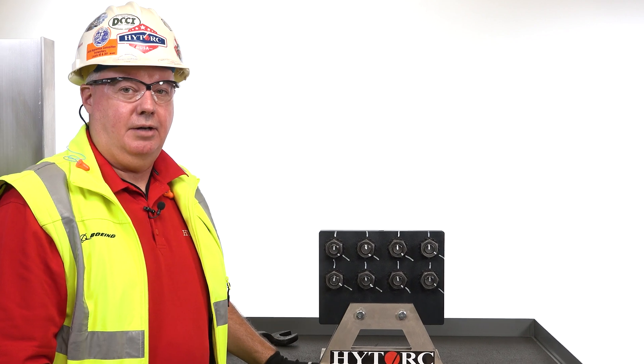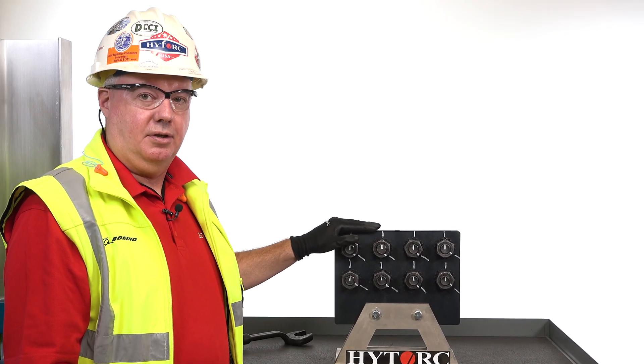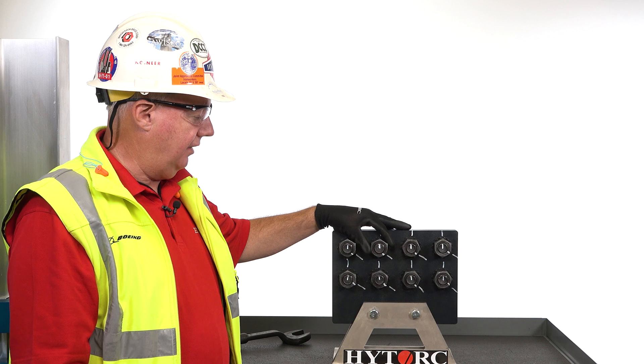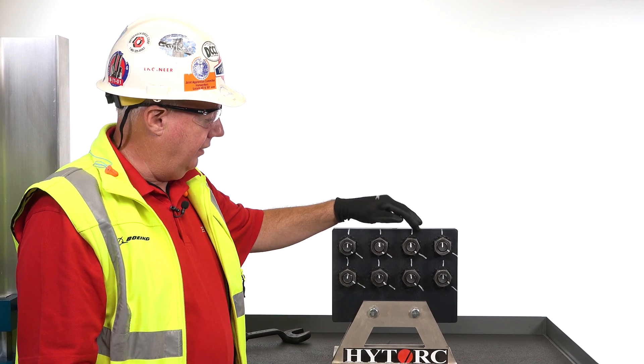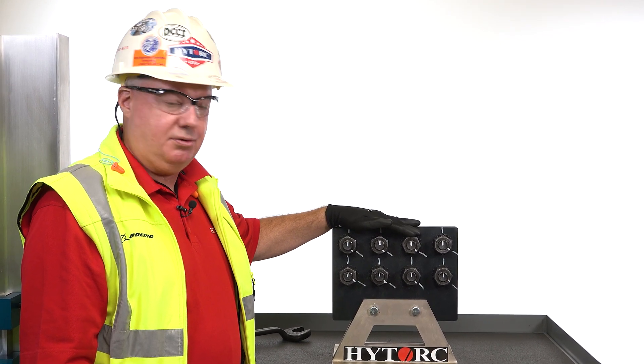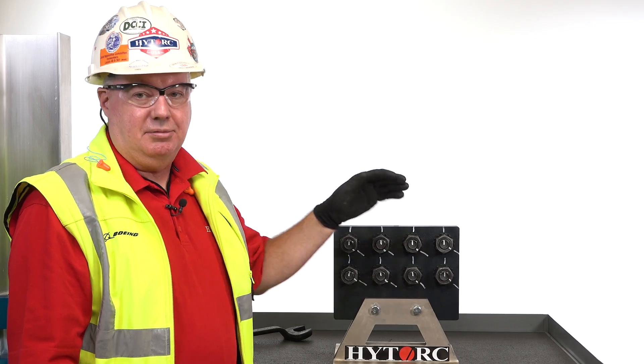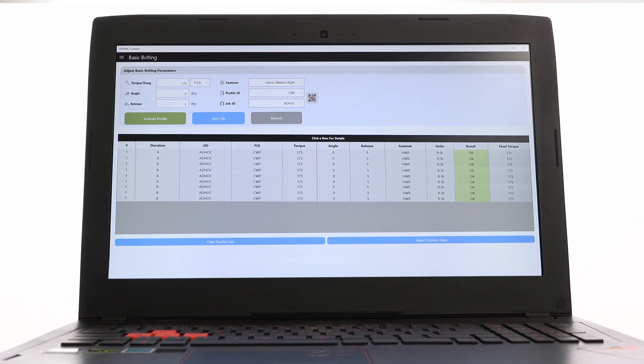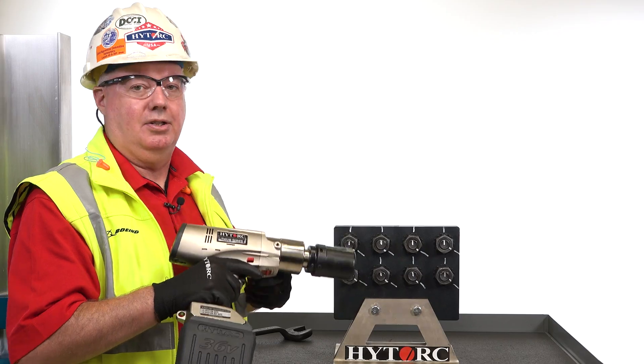And there, now we've completed tightening of all of these fasteners in this structural connection. The inspector can either now verify that by looking at the match marks we provided, or perhaps easier is just look at the app where we've been collecting the data and transmitting it from the tool while we were tightening.